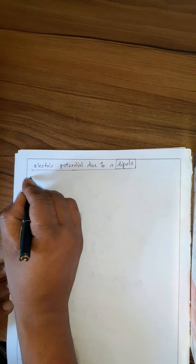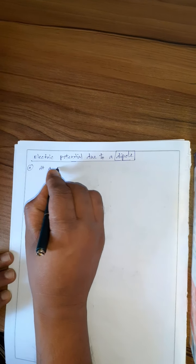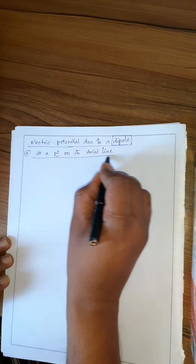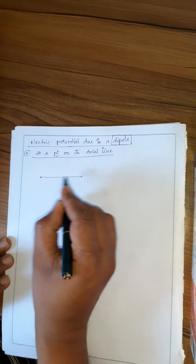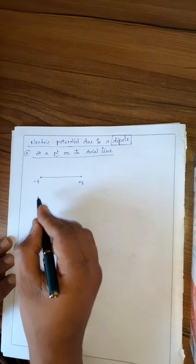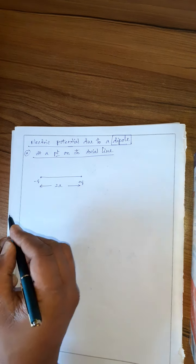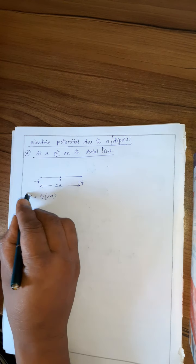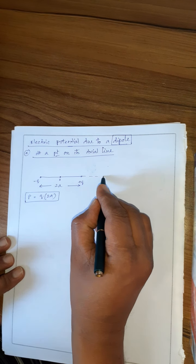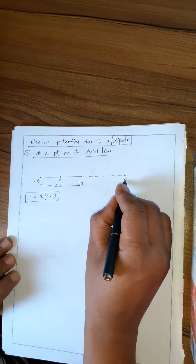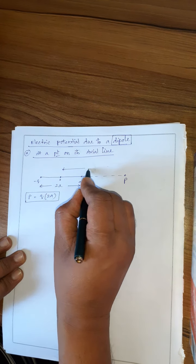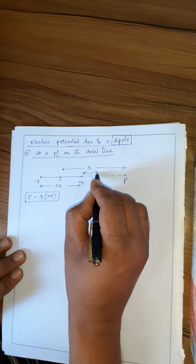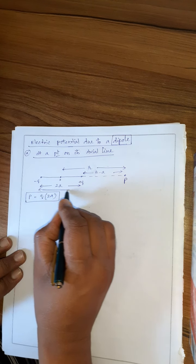Now, electric potential due to a dipole — first we go for a point on its axial line. This was asked a number of times. This is a dipole: minus q and plus q. The separation between them is 2a. This is the center of the dipole. We know that the dipole moment is defined as q into 2a. This is the axial line. Here at point P, they are asking us to find the potential. This point is at a distance r from the center of the dipole. So the point will be at a distance r minus a from plus q, and r plus a from minus q.